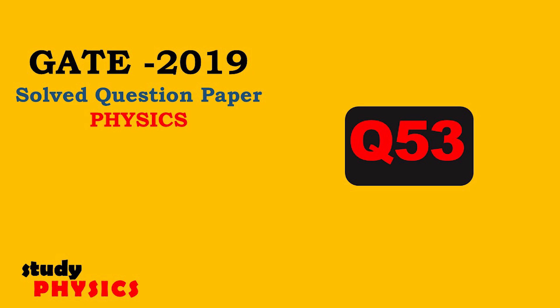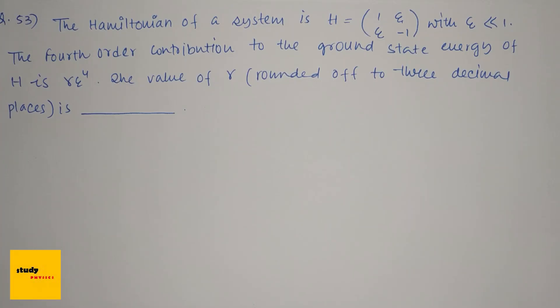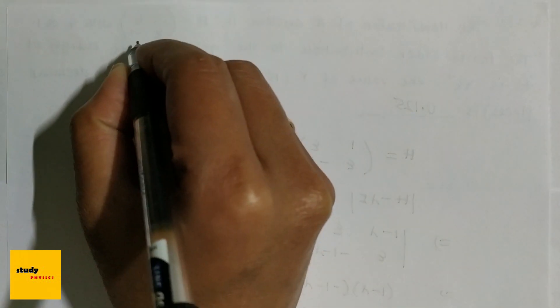Hi everyone, welcome to Study Physics. Here's question number 53. The Hamiltonian of a system is H equals (1, ξ; ξ, -1) with ξ less than 1. The fourth order contribution to the ground state energy of H is γξ to the power 4. We need to find the value of γ. The Hamiltonian here is H equals (1, ξ; ξ, -1).